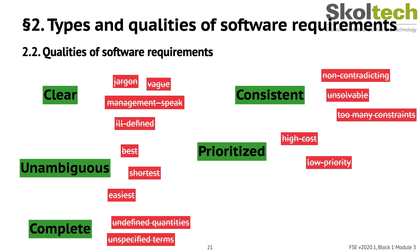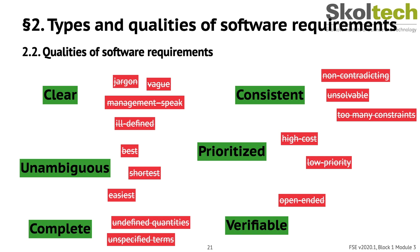Last but not least, requirements must be verifiable. If you can't verify a requirement, how do you know whether you've met it? Being verifiable means requirements must be limited and precisely defined — they can't be open-ended statements such as 'process more work orders per hour.' A better requirement would say 'process at least 100 work orders per hour.'